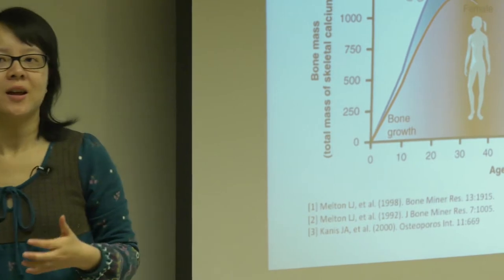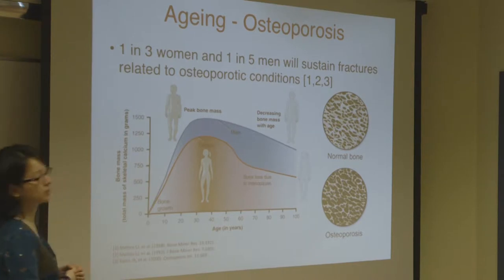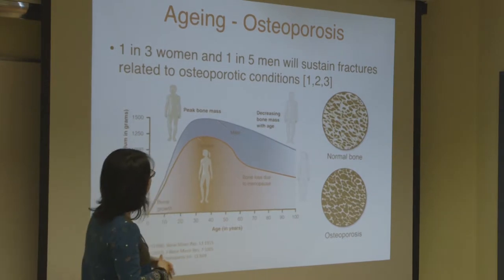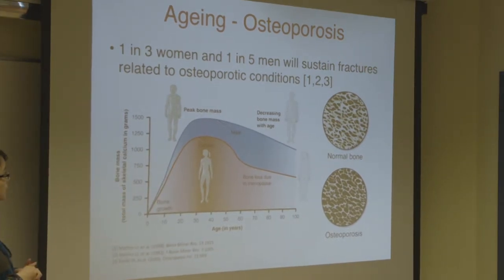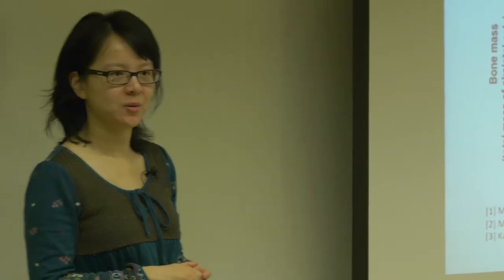For example, if elderly people tend to fall, sometimes they will fracture their bones. Statistics show that one in three women and one in five men is likely to sustain some sort of fracture related to osteoporotic conditions. The statistics are slightly higher for women for hormonal reasons. So a lot of the population we look at are actually elderly women, because this is the population at more danger.